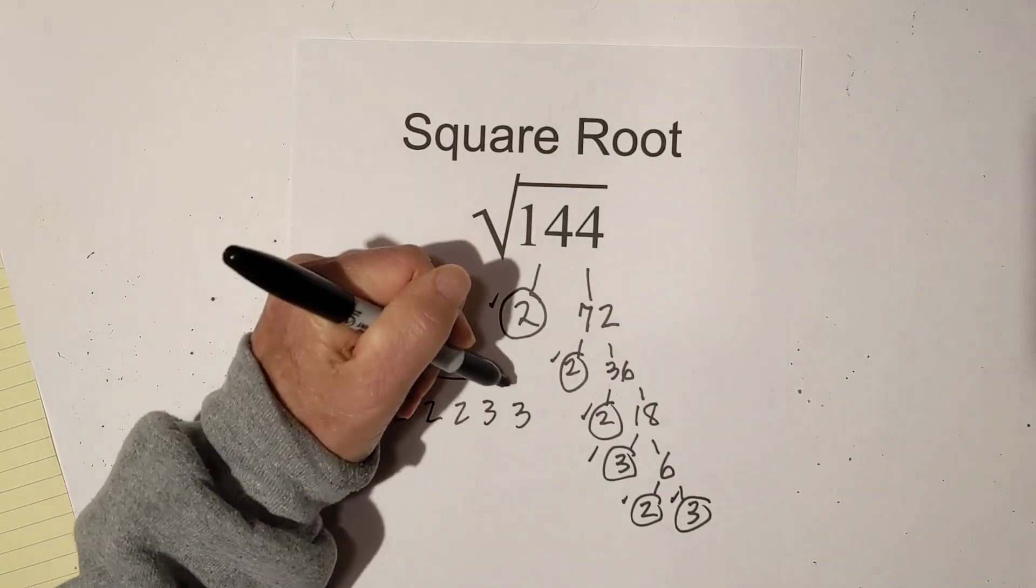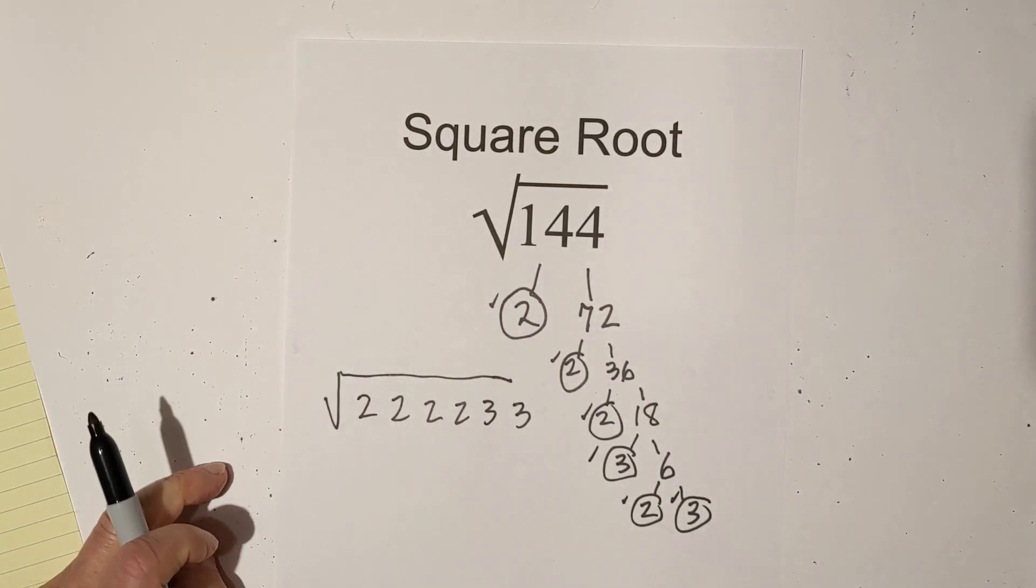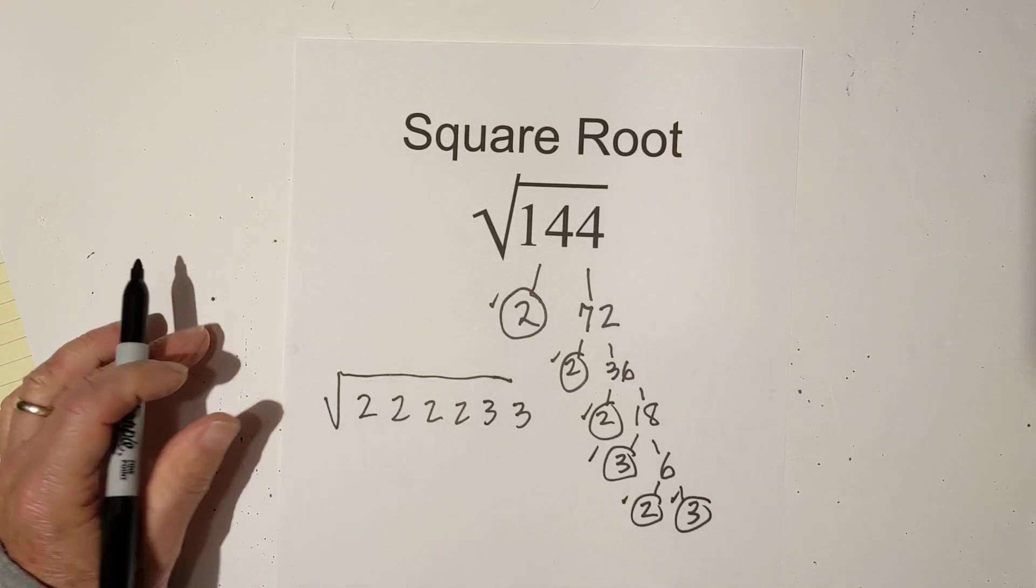So now the rule of thumb is, since it's a square root, which is a number multiplied by itself, if you have 2 of these numbers, you can take it out from under the square root sign.